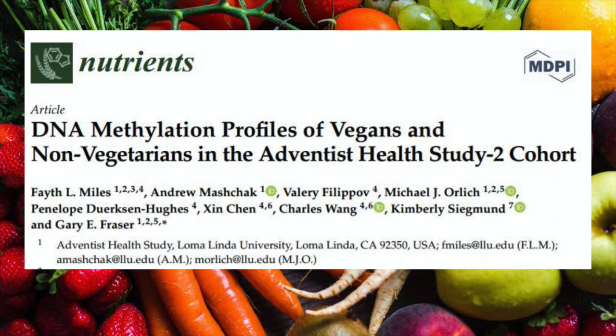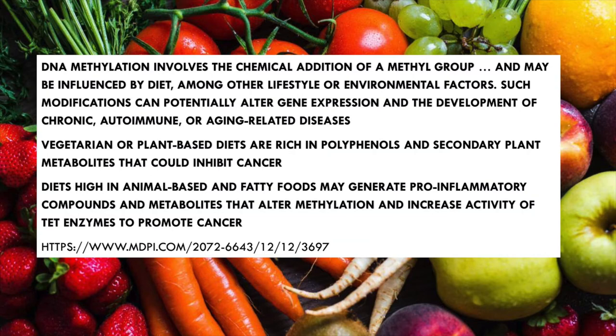We call it the DNA methylation profile. In the Adventist Health Study comparing vegans and non-vegetarians, foods rich in methyl groups — things like folic acid and many vitamins and minerals — when they get into your body they put bookmarks that help us fight long-term disorders, preventing diabetic problems and cancer. Vegetarian or plant-based diets are rich in polyphenols and secondary plant metabolites that could inhibit cancer. Diets high in animal-based and fatty foods may generate pro-inflammatory compounds, and inflammation is something we don't want.